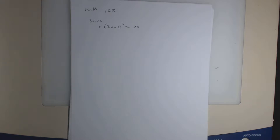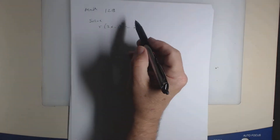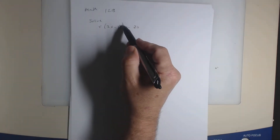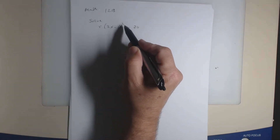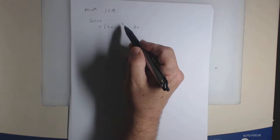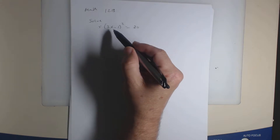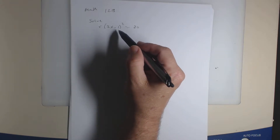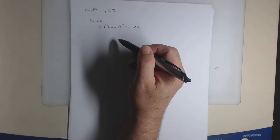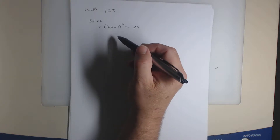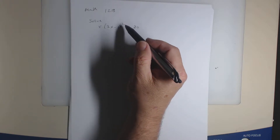So what are you going to do first? We talked about this last class period — you cannot distribute unless the exponent is a 1. That's not a 1, so you cannot distribute. Don't say that's 10x minus 5 and then take the square root of both sides. You're going to get a wrong answer. You cannot distribute because that's a 2. This has to be a 1.